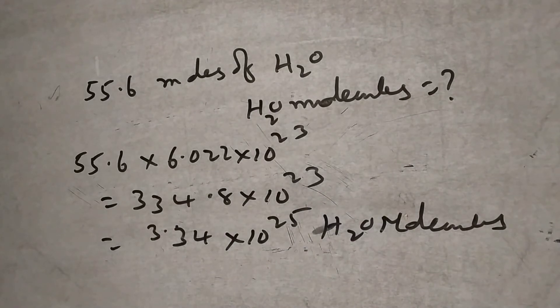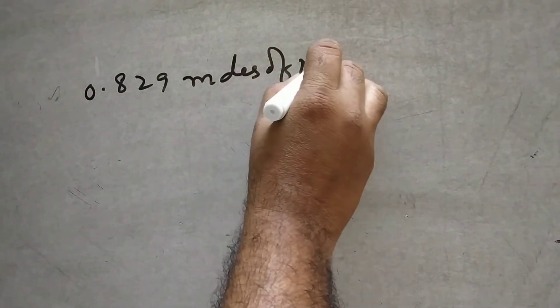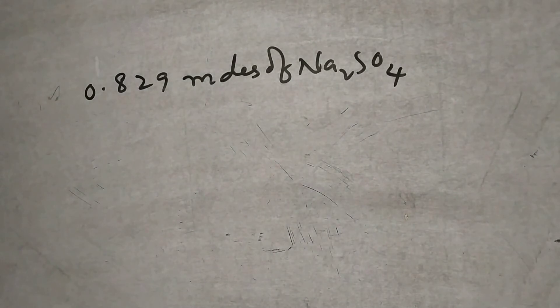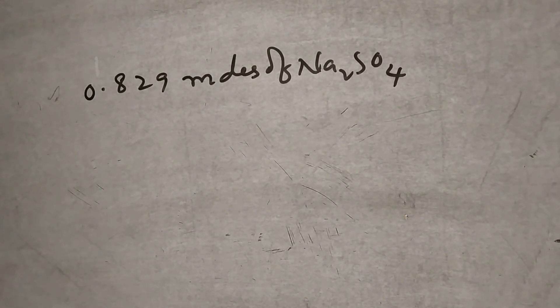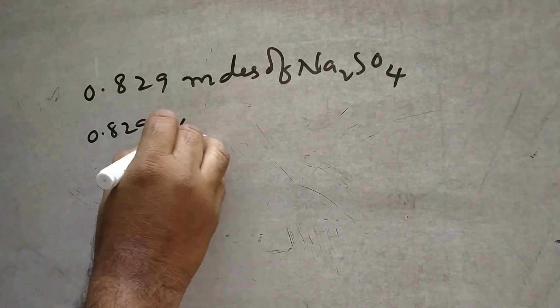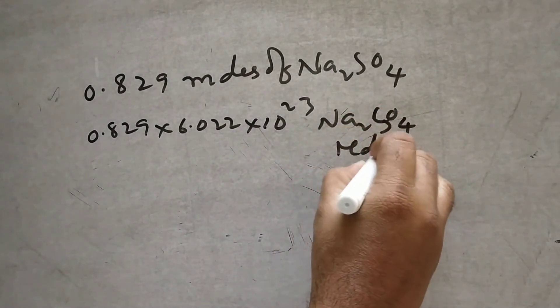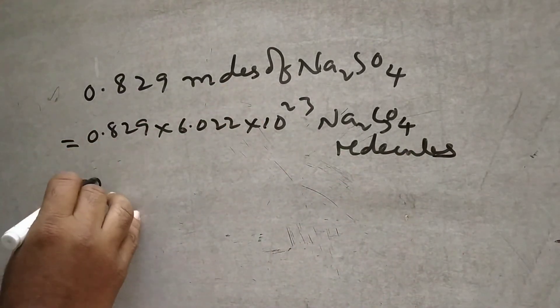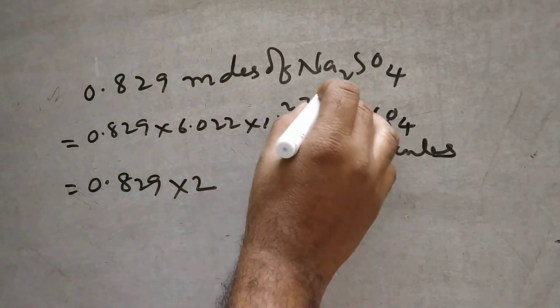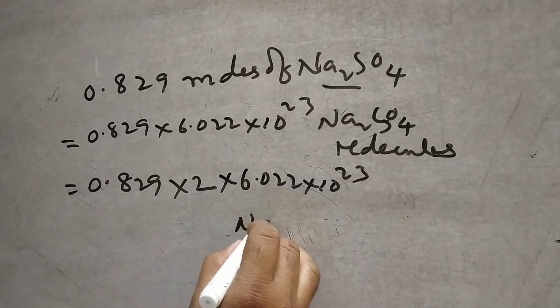Last problem: 0.829 moles of sodium sulfate — how many molecules are present? That is 0.829 into 6.022 into 10 to the power of 23 Na₂SO₄ molecules. If you want only sodium atoms: 0.829 moles into 2 — because there are 2 sodium atoms in Na₂SO₄ — into 6.022 into 10 to the power of 23, and you will get Na⁺ ions.